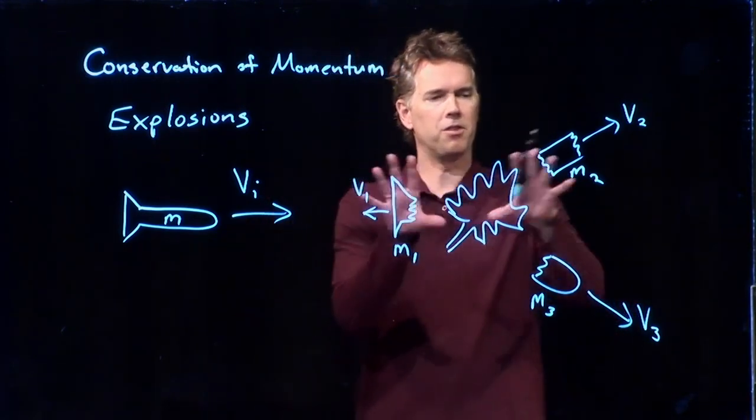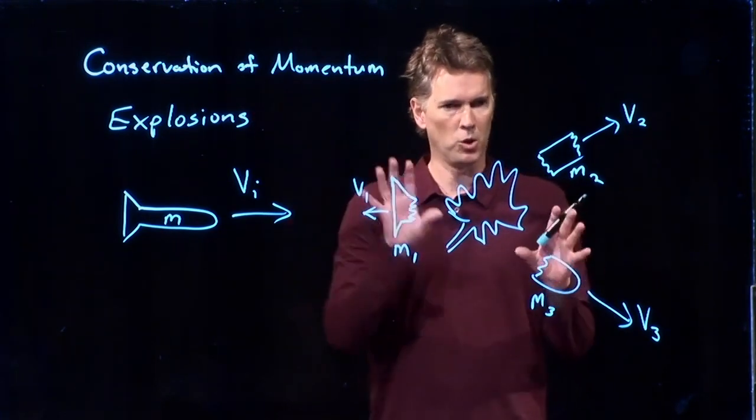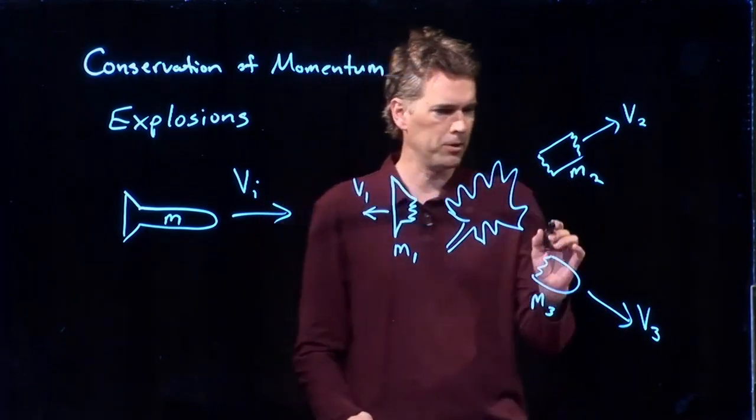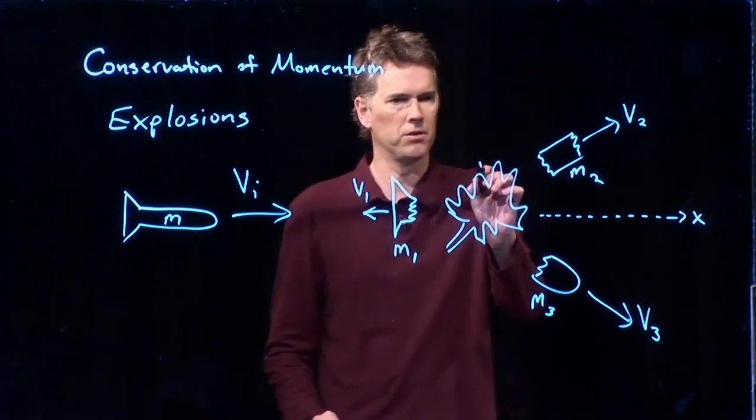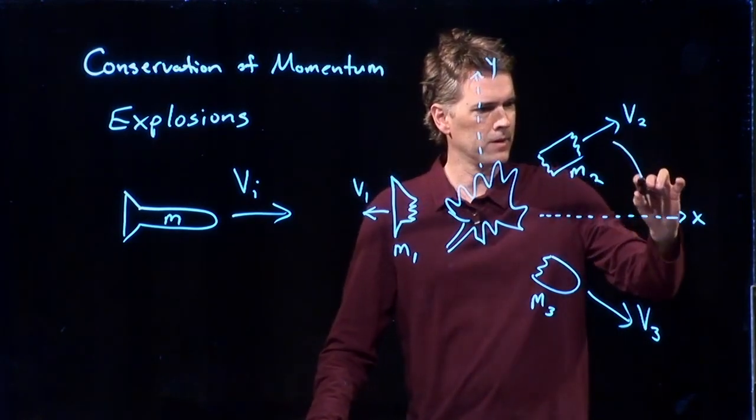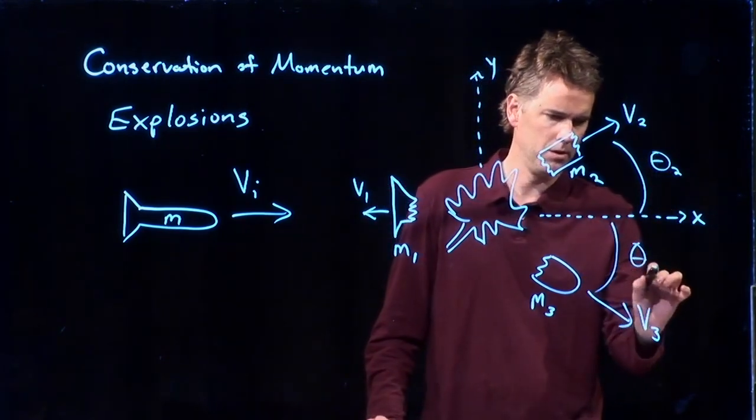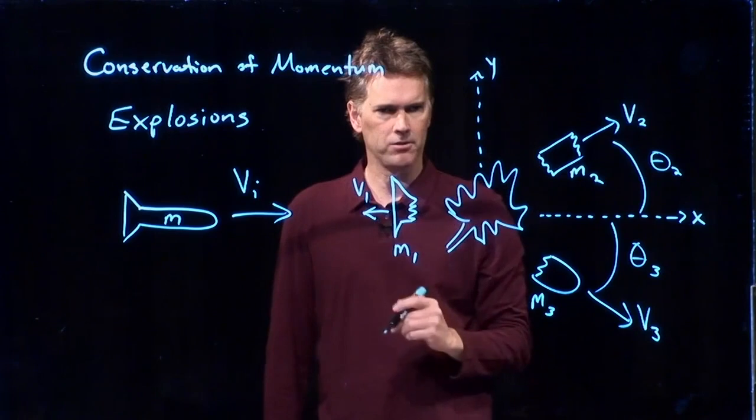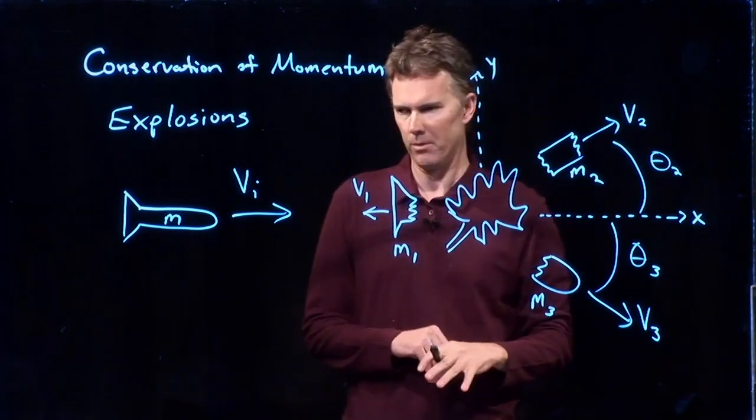Let's see if we can set up this equation that governs this explosion, the conservation of momentum equation, in terms of all these parameters. If this is where the explosion happens, it probably makes sense to label this the x-axis. We'll label that the y-axis, and we need to define some angles here. Let's call this one theta 2, and we'll call this one theta 3. This one is directly back along the negative x-axis. So this is what the problem looks like, and if you have numbers, you can worry about putting them in at the end.